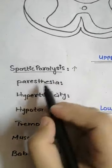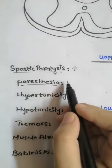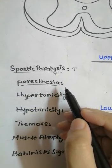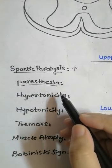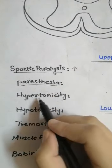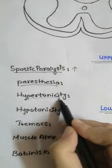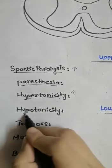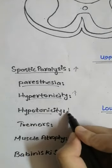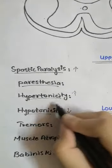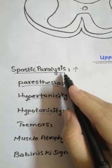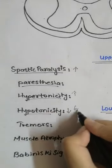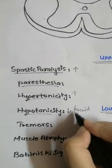The next term is paresthesia — simply the sensation of pins and needles on the body. Then hypertonicity means simply an increase in muscle tone, while hypotonicity is a decrease in muscle tone. Hypertonicity ultimately leads to spastic paralysis, while hypotonicity leads to flaccid paralysis, in which there is a decrease in muscle tone.